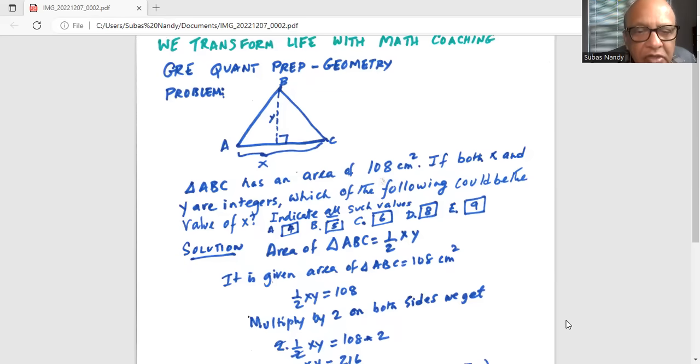The solution: area of triangle ABC, as we know, is half base times altitude, or half of x, which is the base, multiplied by y, which is the altitude or height.